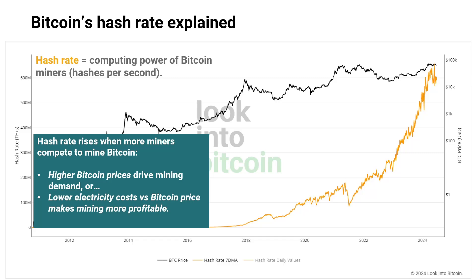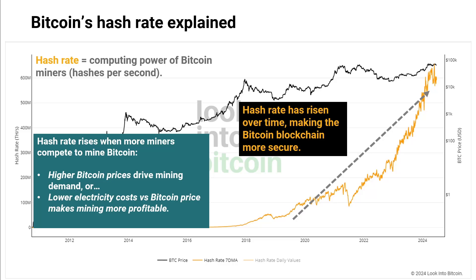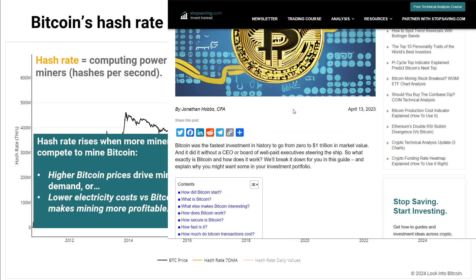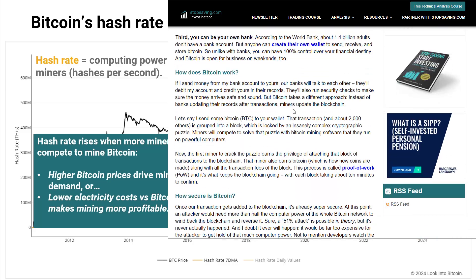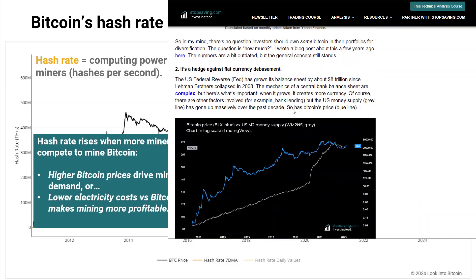The hash rate can also increase when the electricity cost of mining Bitcoin is low compared to its price — that makes Bitcoin mining more profitable, which increases mining competitiveness and hence the hash rate. The hash rate can sometimes go down when Bitcoin's price drops, as lower prices make mining less profitable, which causes mining activity and hence the hash rate to drop too. But notice how it's generally trended up over time, making the Bitcoin blockchain more secure.